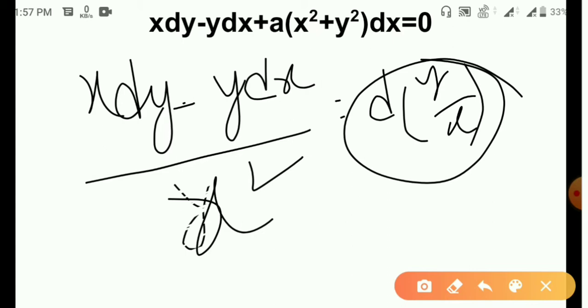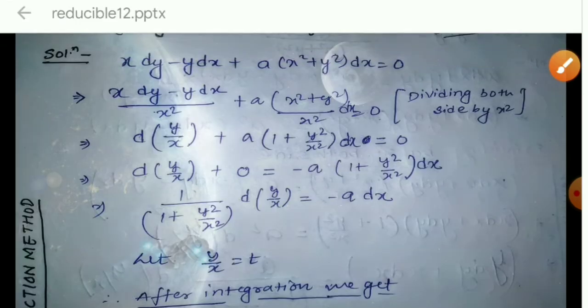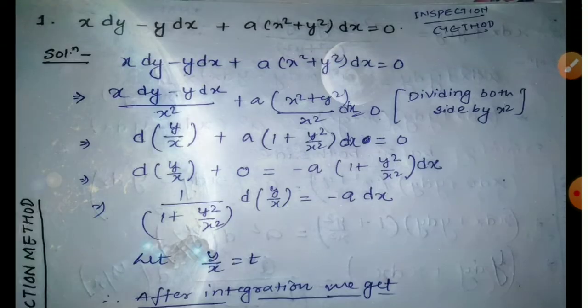Let's go to the solution. Here we have to divide. So: d(y/x) plus a(1 + y²/x²) dx equals zero. So d(y/x) equals minus a into (1 + y²/x²) dx.